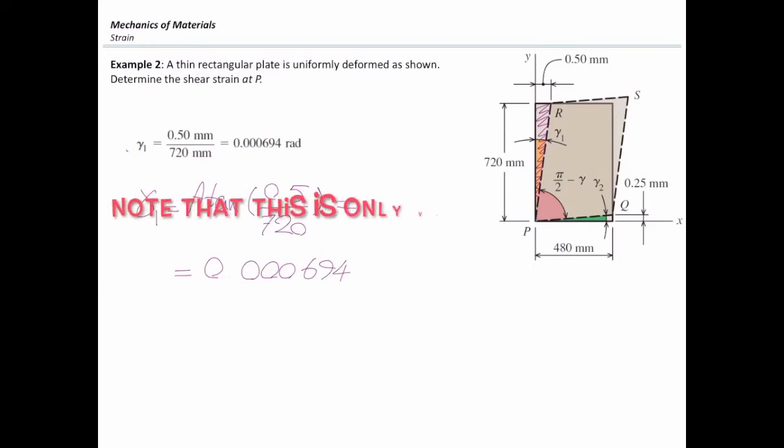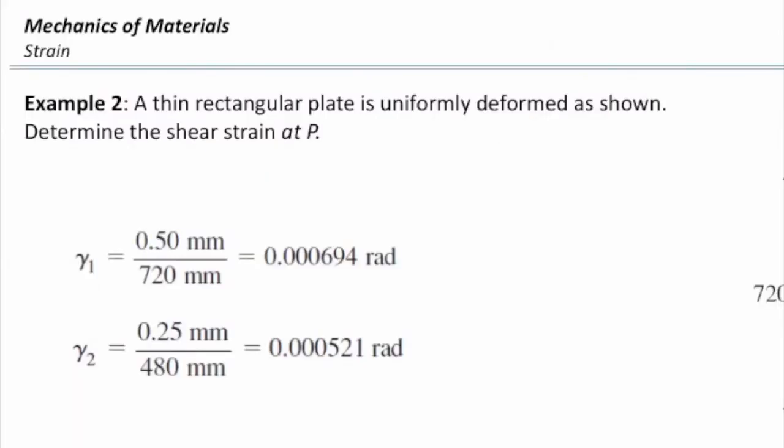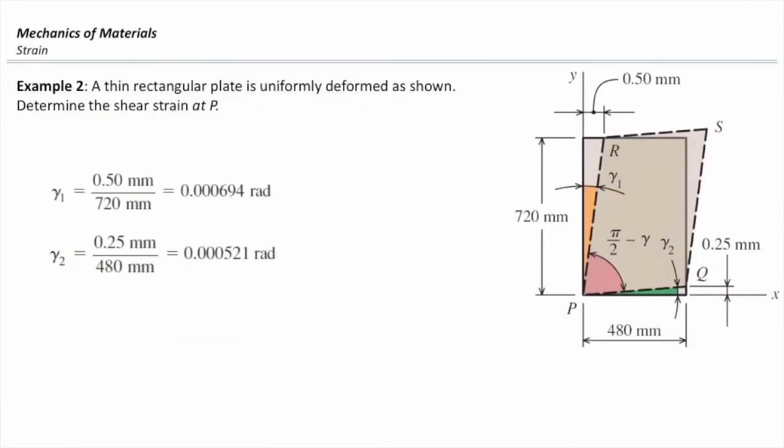To be on the safe side, always use tangent. I found sometimes it's confusing for students. So always use tangent. You will get the same number. All right. So that would be gamma 1. For gamma 2, I will follow the same procedure. 0.25 divided by 4AD would be 0.000521. How much is the total change in the angle at that point? Total change in the angle is gamma 1 plus gamma 2. I simply added them together and converted into microstrain. That gave me 1215 microradian.